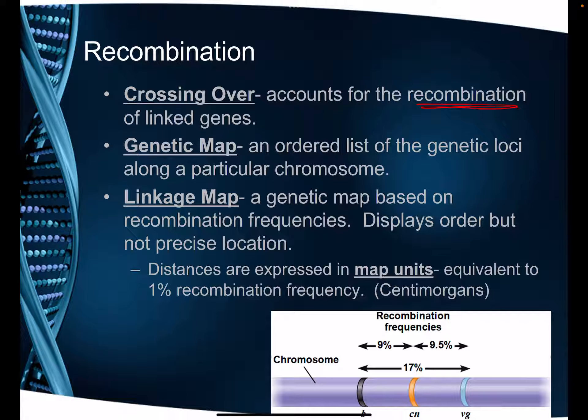We can look at crossing over data and make what's called a genetic map, which shows a list of the genes on the chromosome and gives you the distances between them.